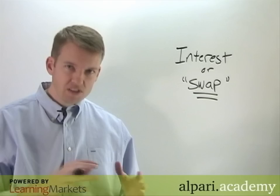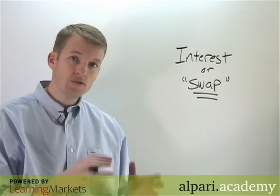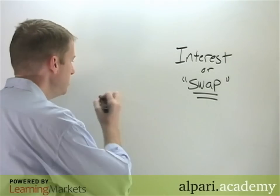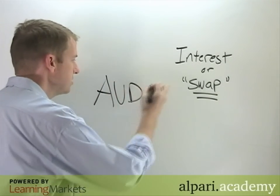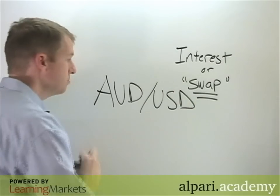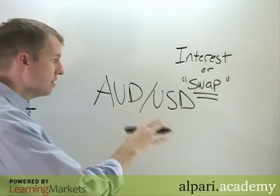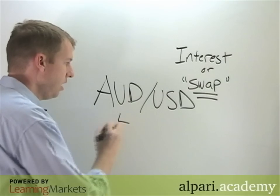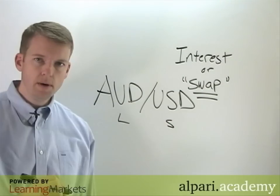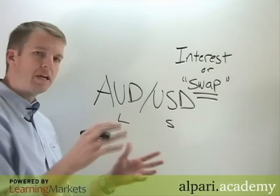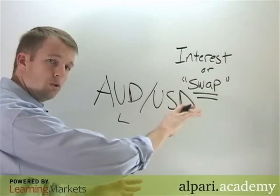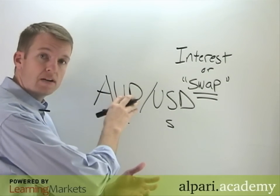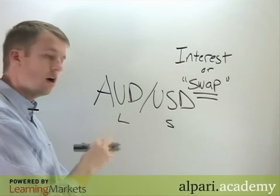The best way to explain this is to look at a specific example and talk about why there's interest being charged on one side of a position and being paid on the other side. Let's take a look at the Aussie dollar — this is a good example right now because it's fairly dramatic. When you buy the Aussie dollar exchange rate, in essence you're long the Aussie and you're short the U.S. dollar. You're long the base currency.